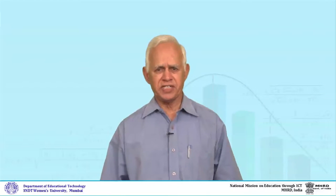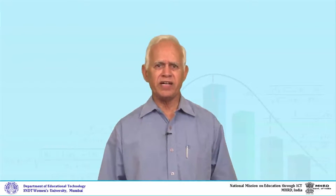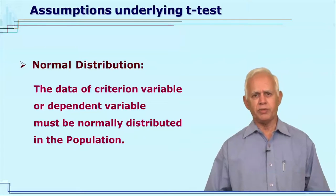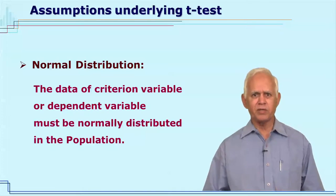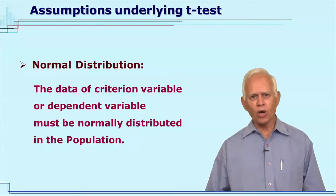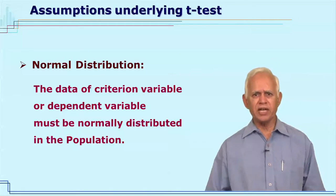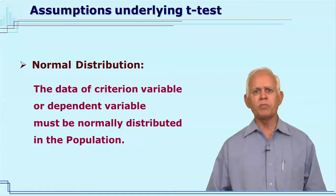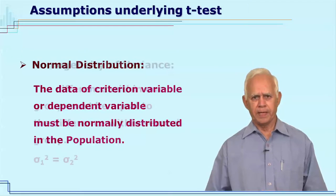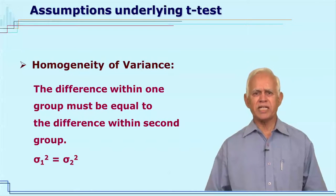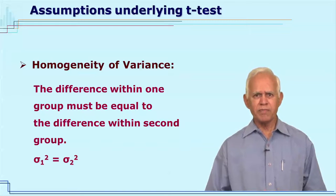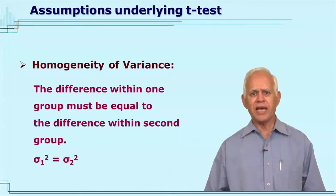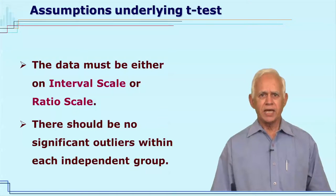As a researcher, you must know what assumptions must be satisfied by the data in order to analyze with the help of a t-test. The first assumption is normal distribution — the data of the dependent variable, in the case of the experimental group and in all other studies the criterion variable, must have a normal distribution in the population. The second assumption is homogeneity of variance, meaning the variations within a group must be equal to the variations in another group.